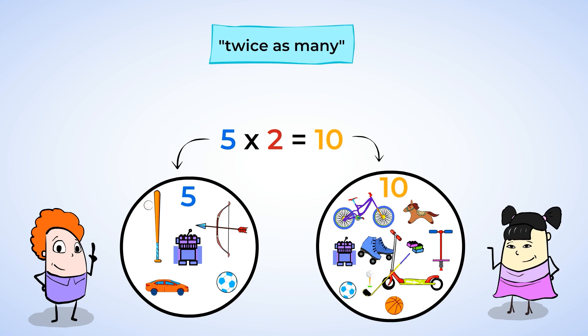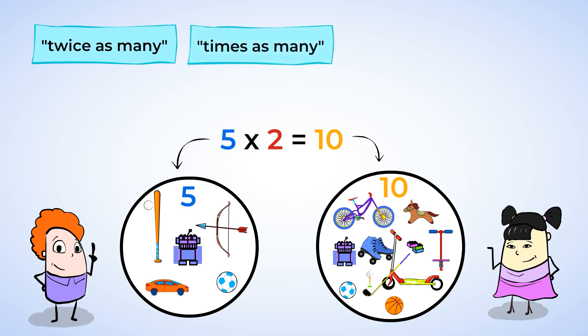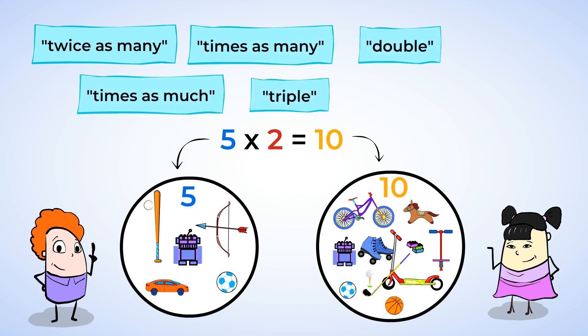By looking at key words and phrases in sentences or statements, we can translate them and write multiplication expressions or equations to solve the word problems. Some other key words or phrases that indicate multiplication are: times as many, times as much, double, triple, twice, and product.